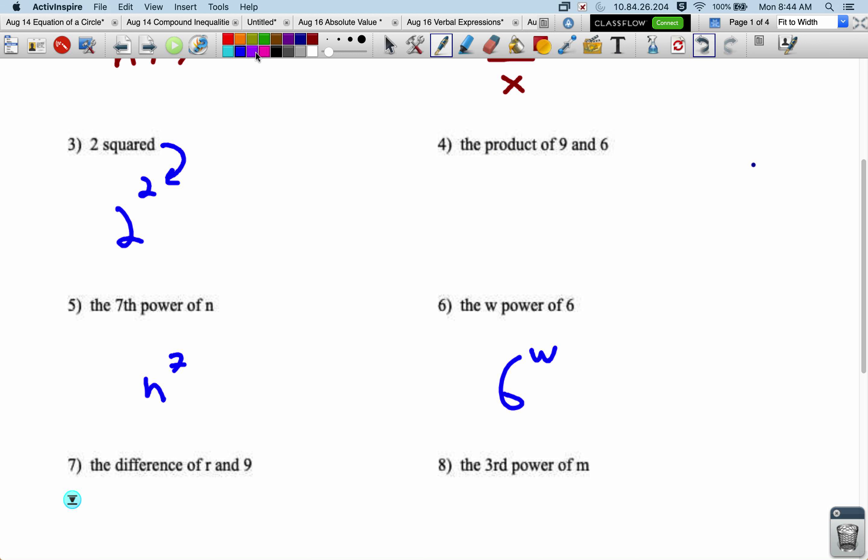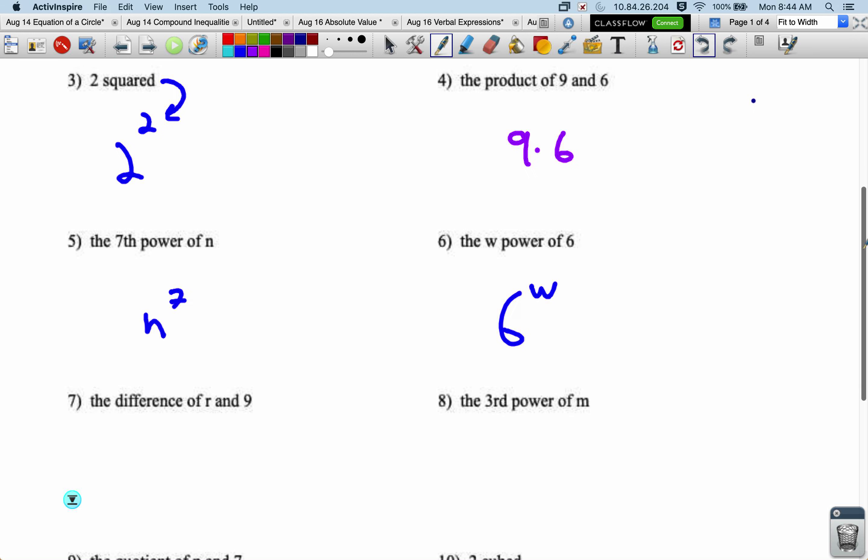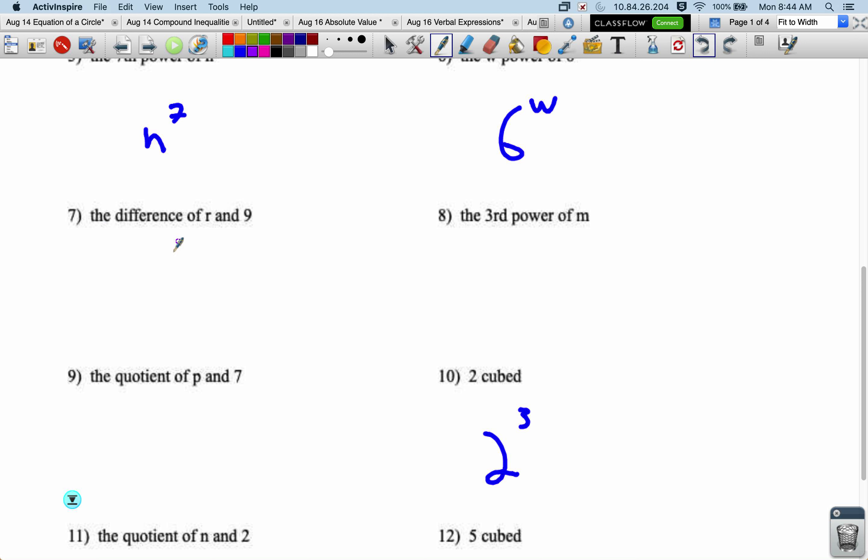Product, that's our word for multiplication, so this should be 9 times 6. Keep it in the same order, we put multiplication in between. Difference, that's our word for subtraction, so r minus 9 for number 7.